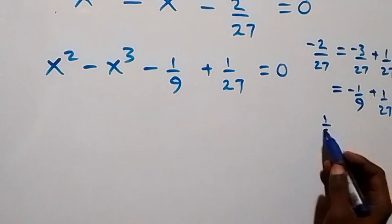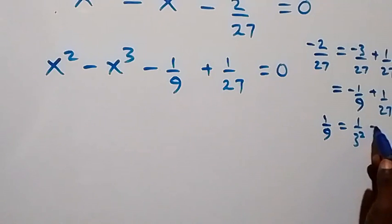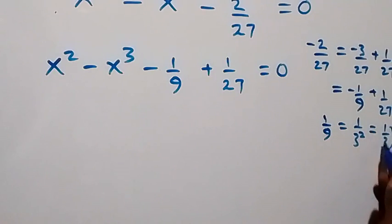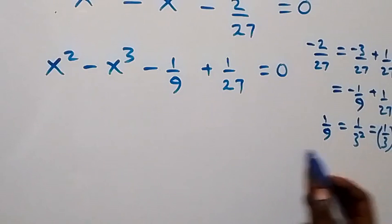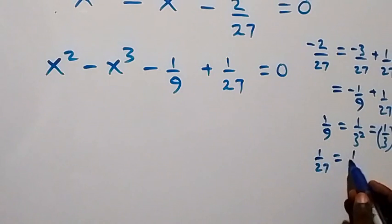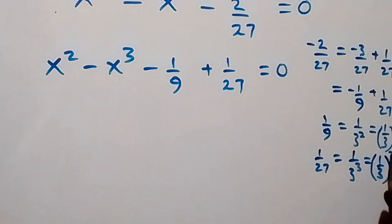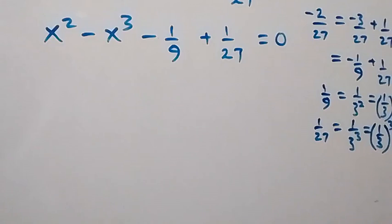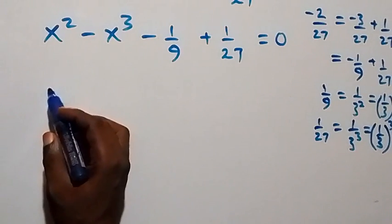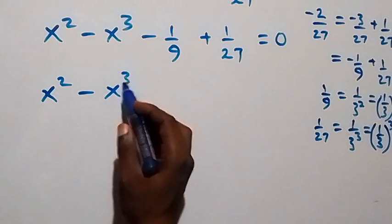From here, 1 over 9 can be written as 1 over 3 squared, which is also (1/3) squared. And 1 over 27 can also be written as 1 over 3 raised to power 3, which is also (1/3) cubed. Then what we have becomes x squared minus x cubed.